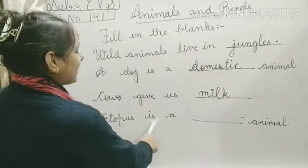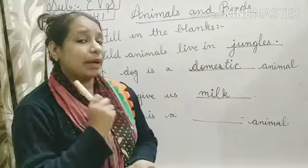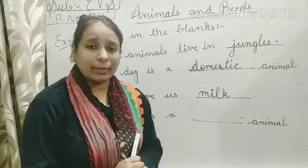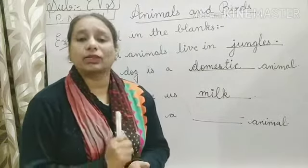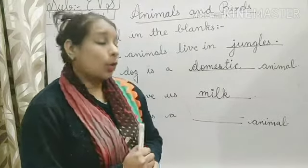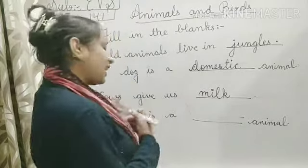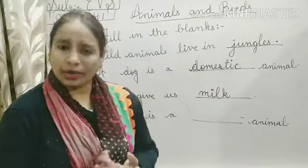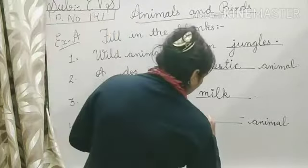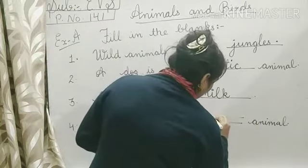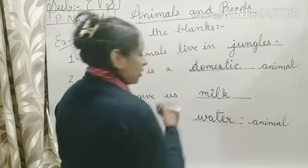Next: Octopus is a DASH animal. You know a special thing about octopus — octopus has eight legs, and it lives in water. So octopus is a water animal: W-A-T-E-R, water animal.